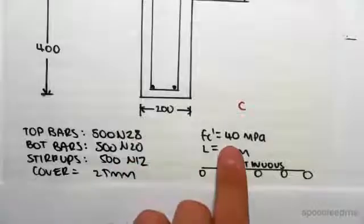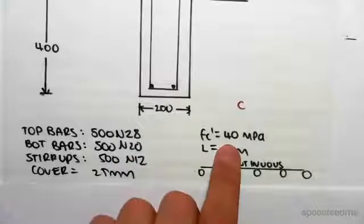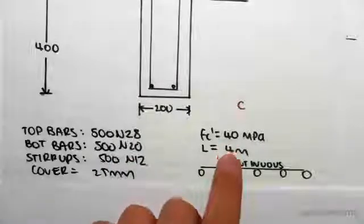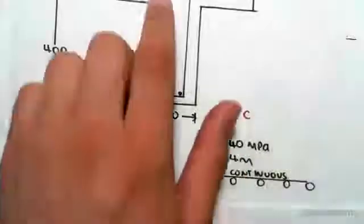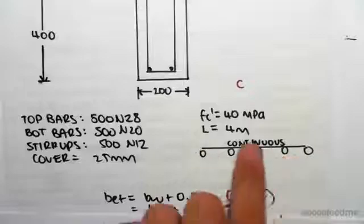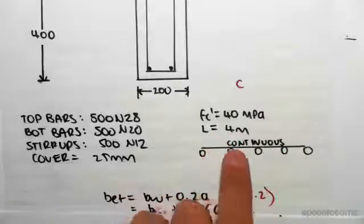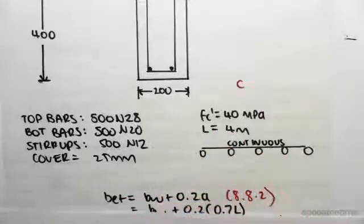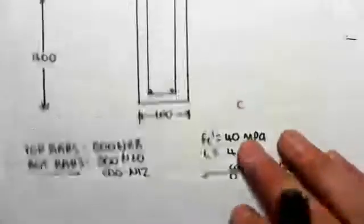The characteristic strength of our concrete is 40 MPa. The profile spans continuously with a span of four meters.